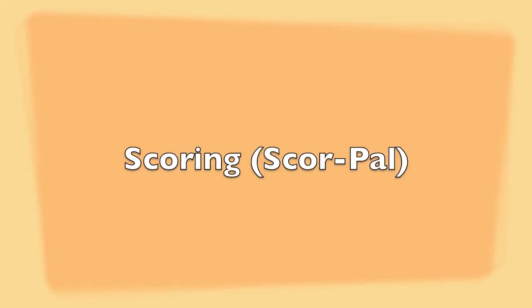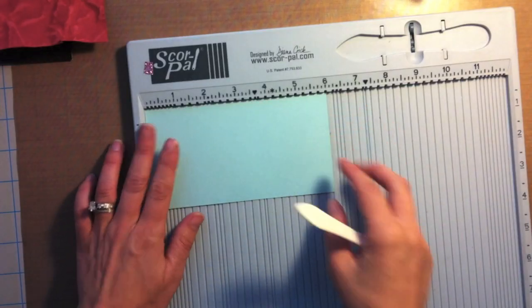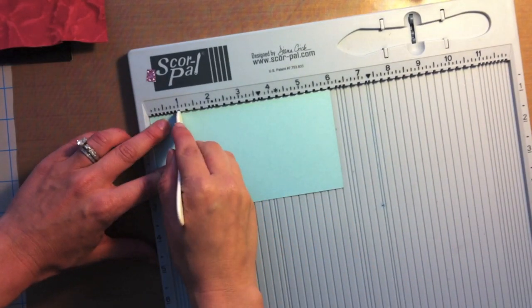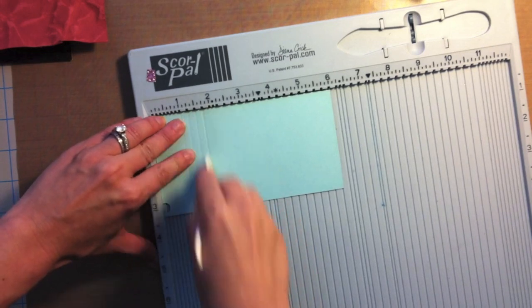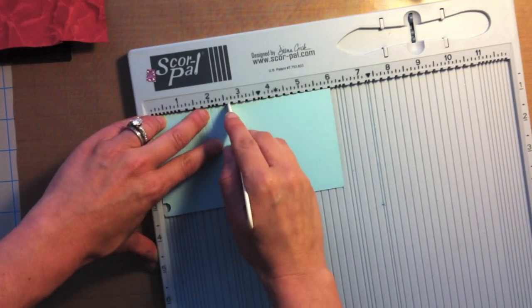Now here I want to show you about scoring. I'm using the ScorPal but Martha Stewart has a scoreboard and there's a Score Buddy and there's all kinds of scoring tools. I'm just quickly scoring some lines for you.